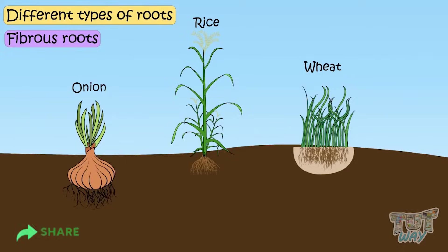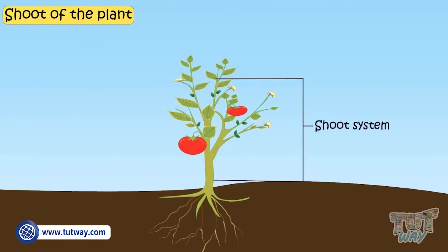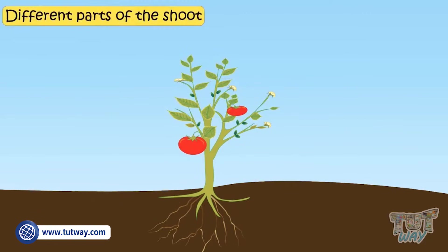Now let's learn about the shoot of the plant. Part of the plant that grows above the ground is called shoot. Now let's see different parts of the shoot.